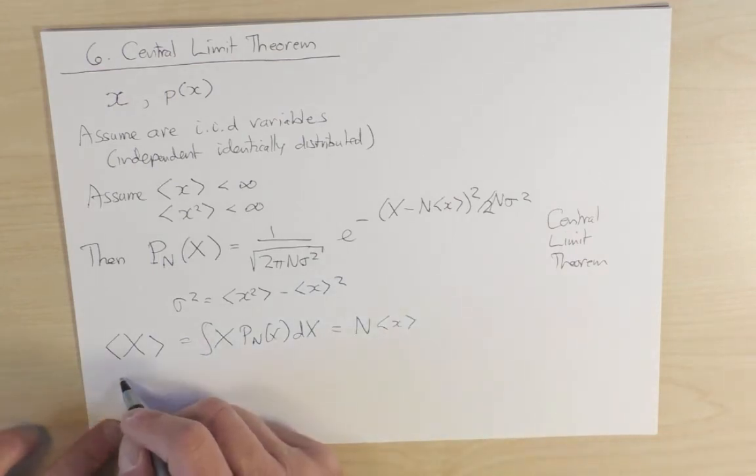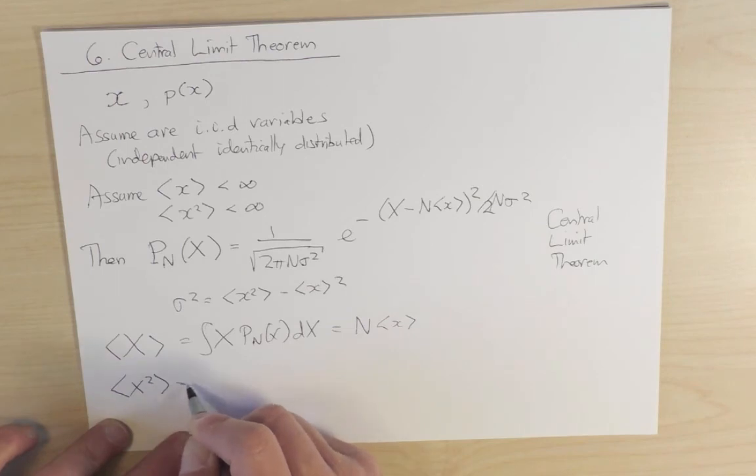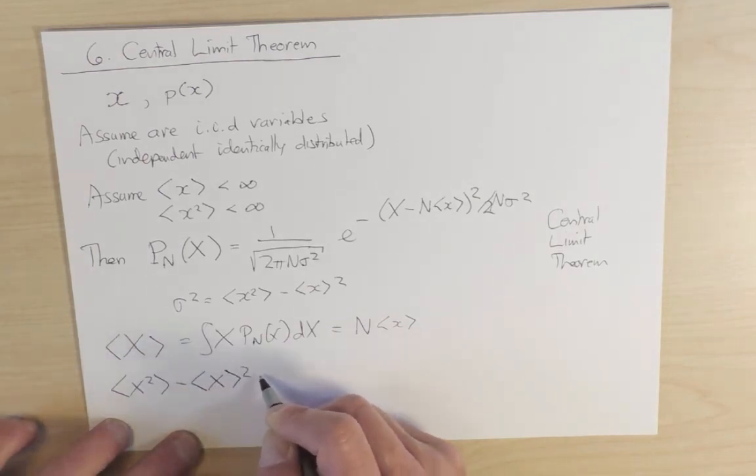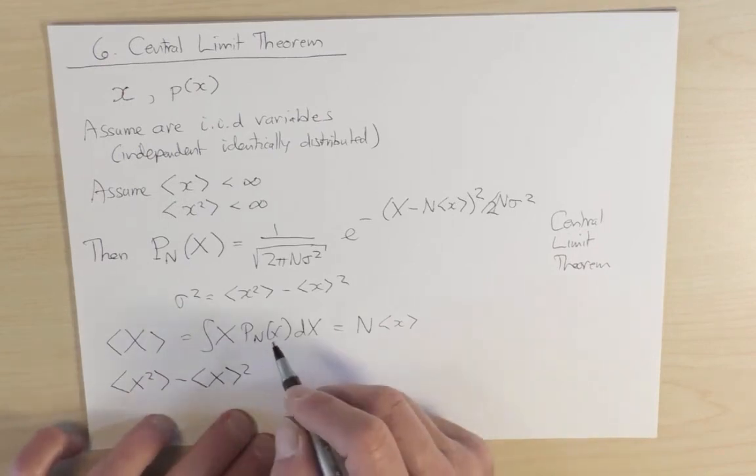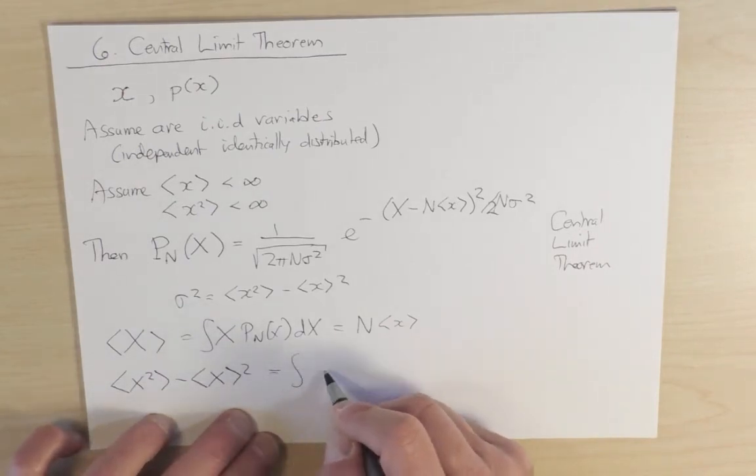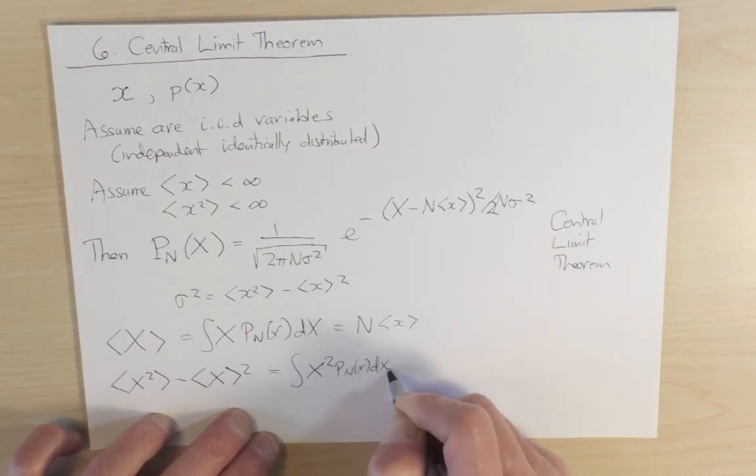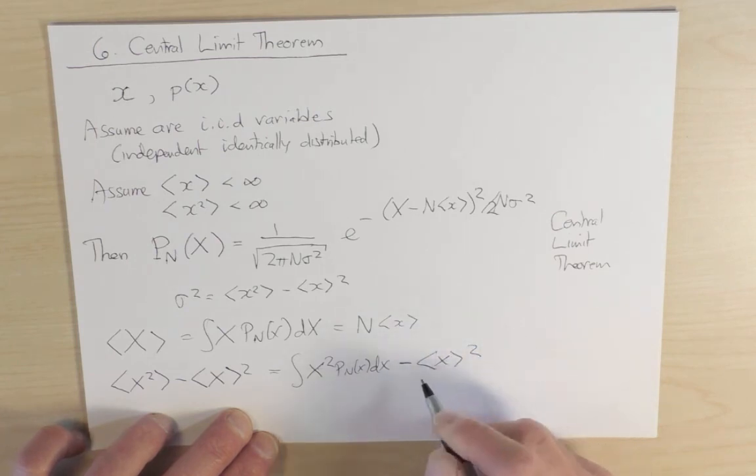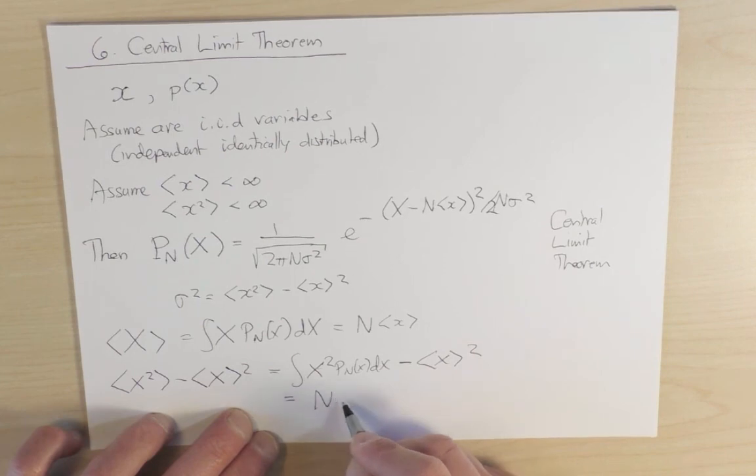And similarly, the variance after many steps of a random walk, x squared average minus x average squared, again using the same definition as before, so this is the integral of x squared p n of x dx minus x average squared, which we've already computed, this thing is simply equal to n sigma squared.